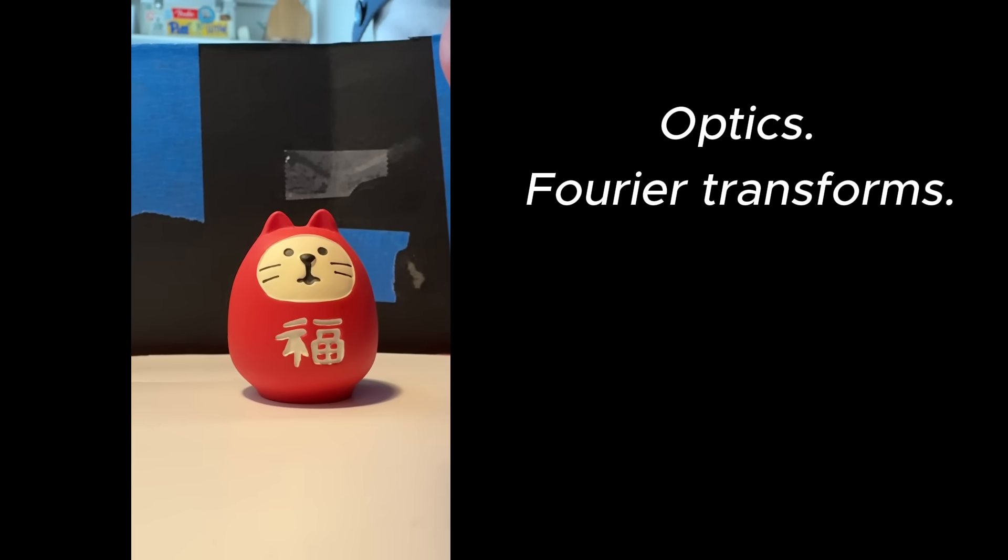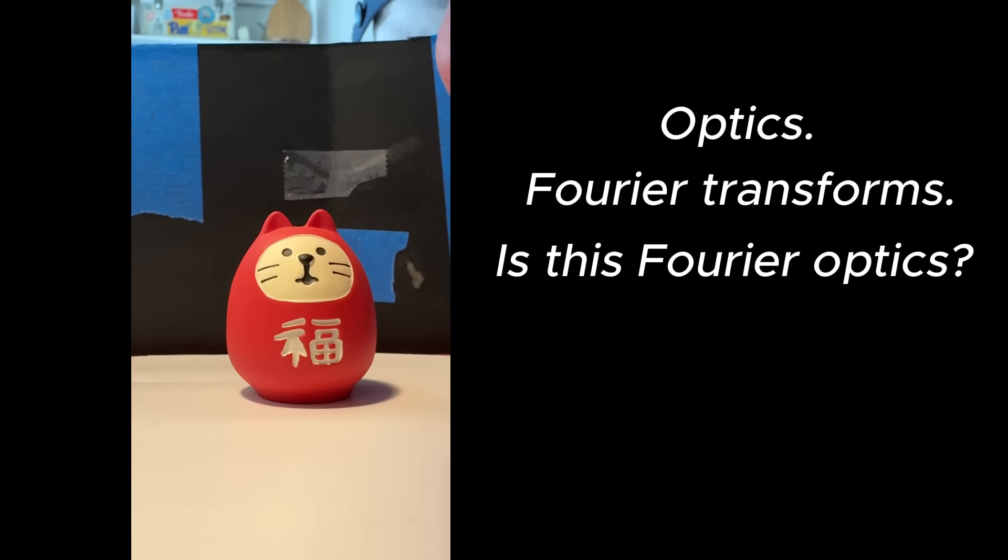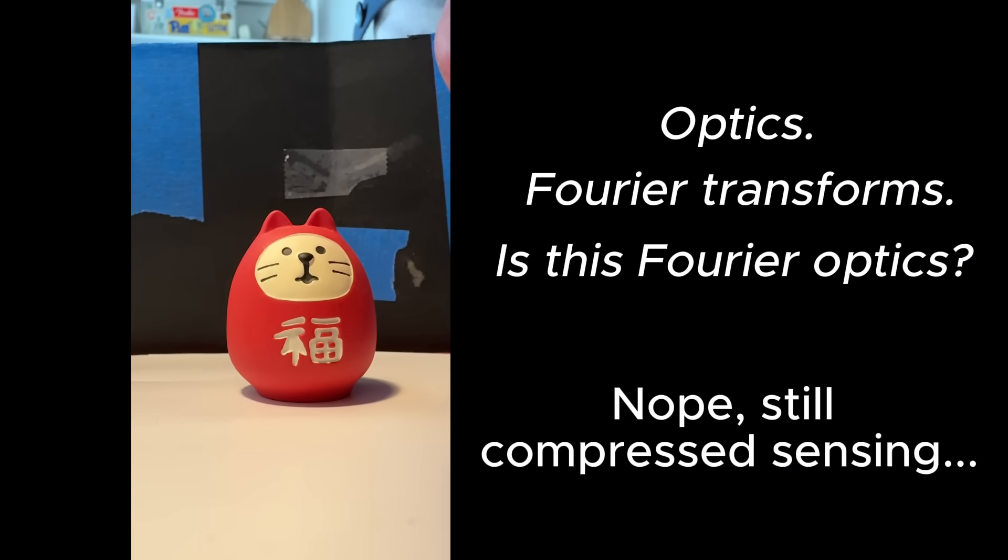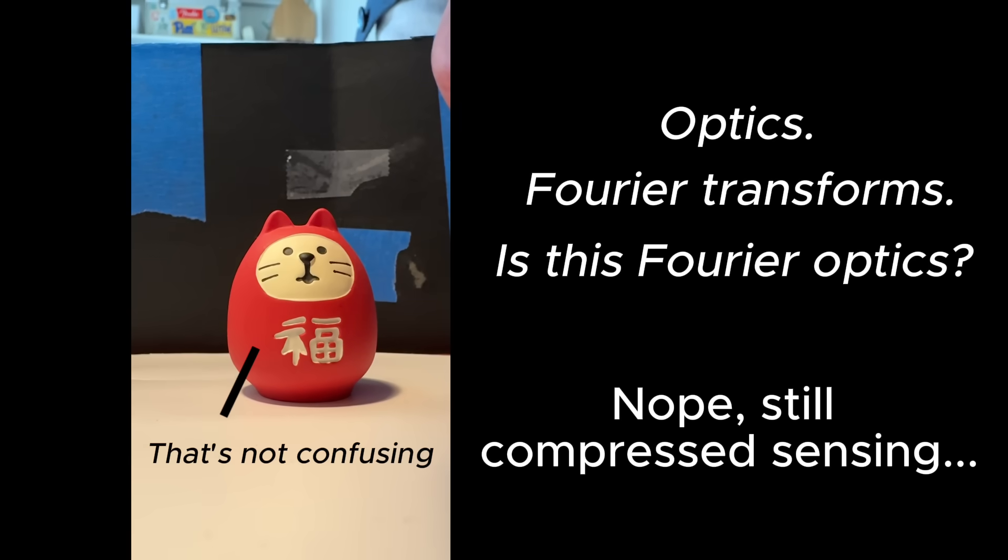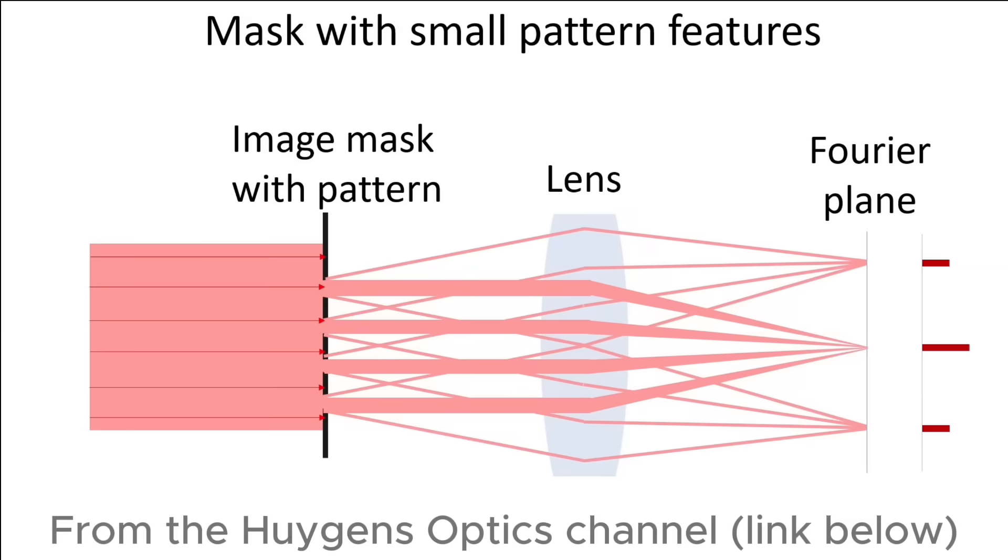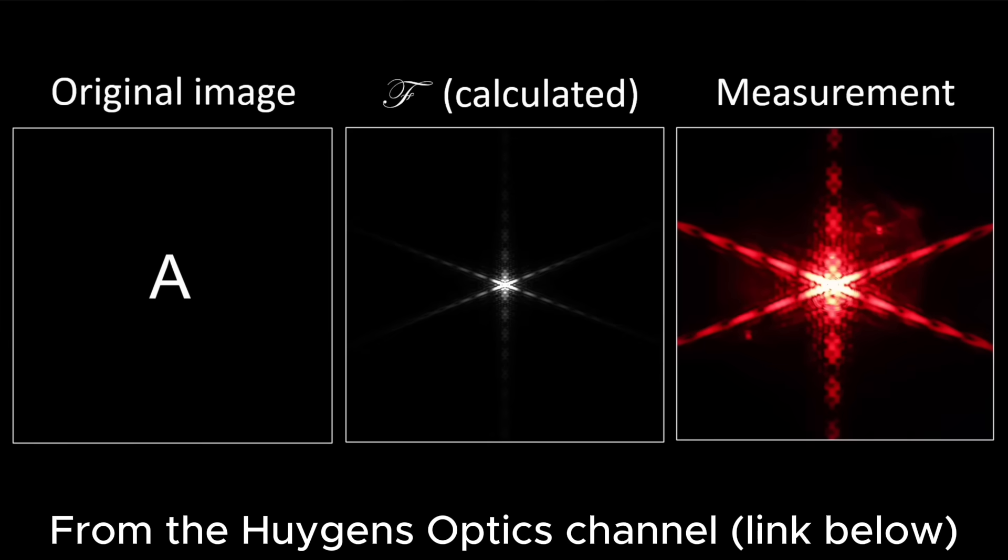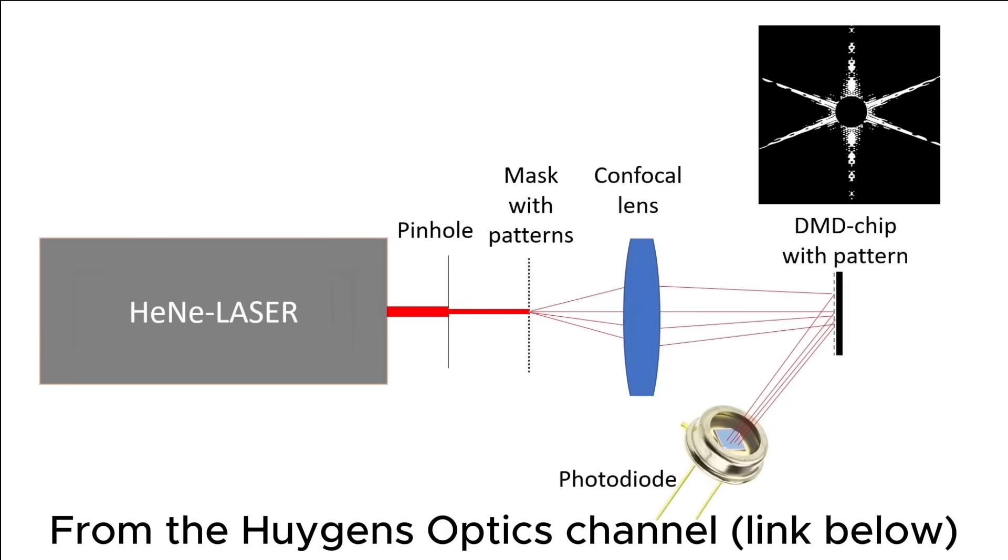Just to be clear, this isn't Fourier optics, although some concepts are similar. This is compressed sensing using sinusoidal patterns as the basis illumination set. If you'd like a really clear explanation of Fourier optics, I recommend a video on the Huygens Optics channel. It even concludes with a Fourier filtering demo, which is a really nice example of fast compressed sensing.